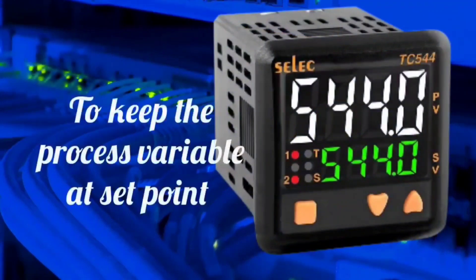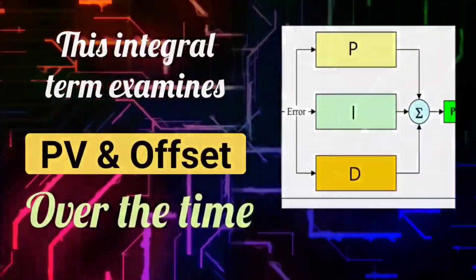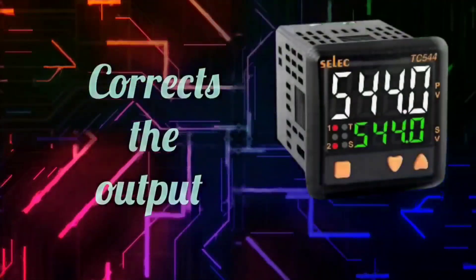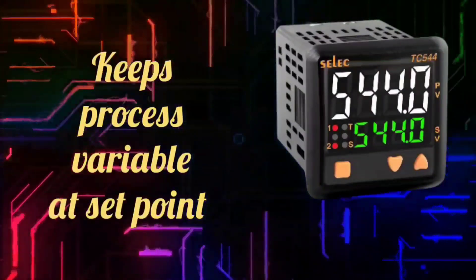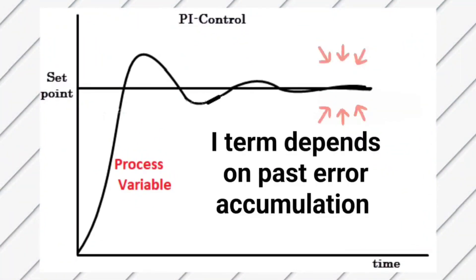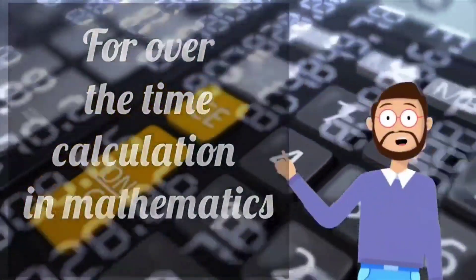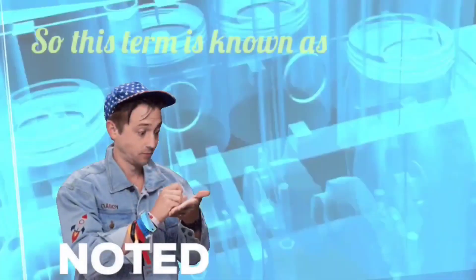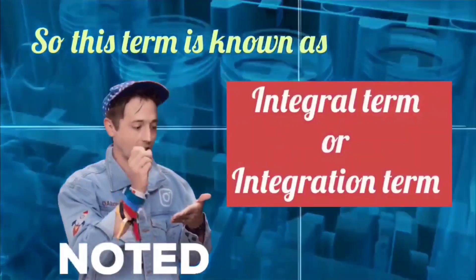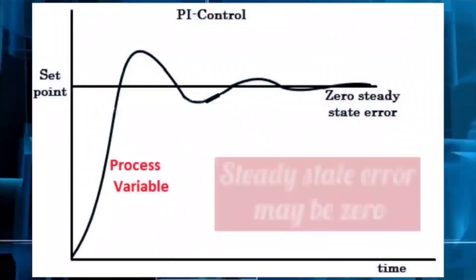To bring this error to the set point, the I term is used. This integral term examines the process variable and the offset over time, and by correcting the output, the value of the process variable is brought to the set point. The integral term depends on the accumulation of past errors. In mathematics, integration is used for over-the-time calculation, therefore this term is called the integral or integration term. Using the integral term, the steady-state error becomes zero.